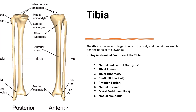The tibial tuberosity is located just below the knee joint. This bony prominence serves as an attachment site for the patellar ligament, which connects the patella — the kneecap — to the tibia. It aids in extension of the knee.